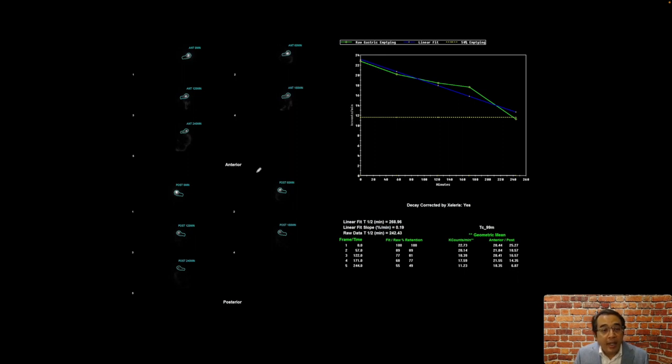All right, here's a gastric emptying study. We are looking at multiple anterior and posterior images at different time points. This is where we see the gastric retention at several time points. Looking at these numbers, these are all abnormal. About 50% of the activity remains in the stomach at the end of four hours, so they have gastroparesis or severely delayed gastric emptying.